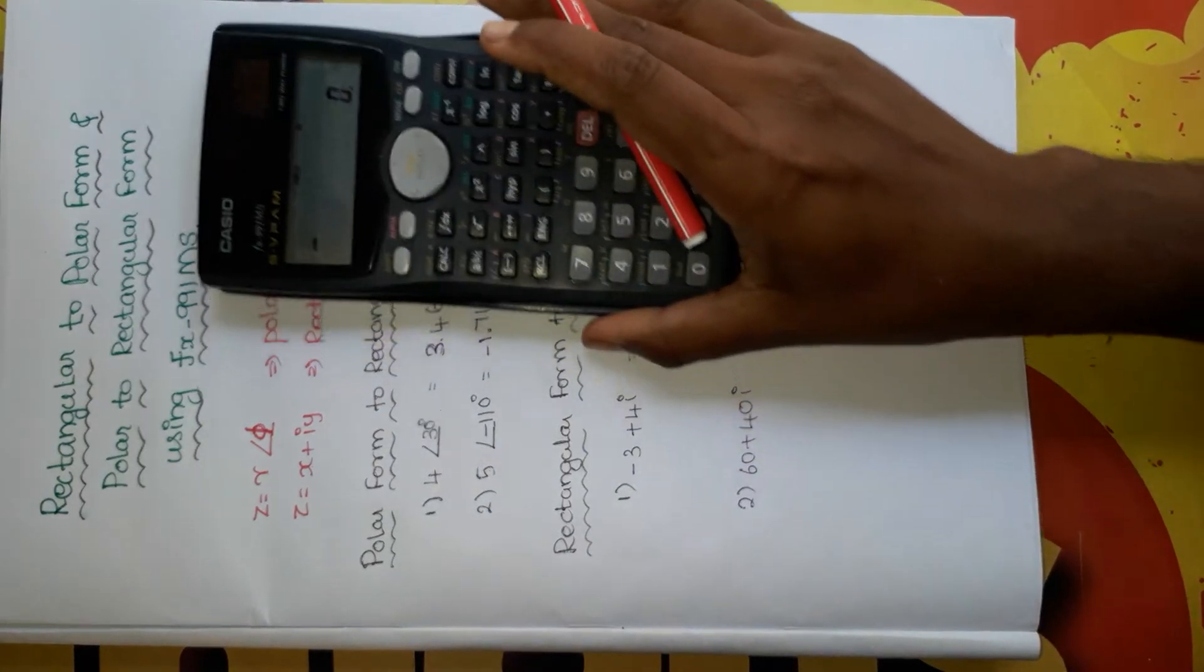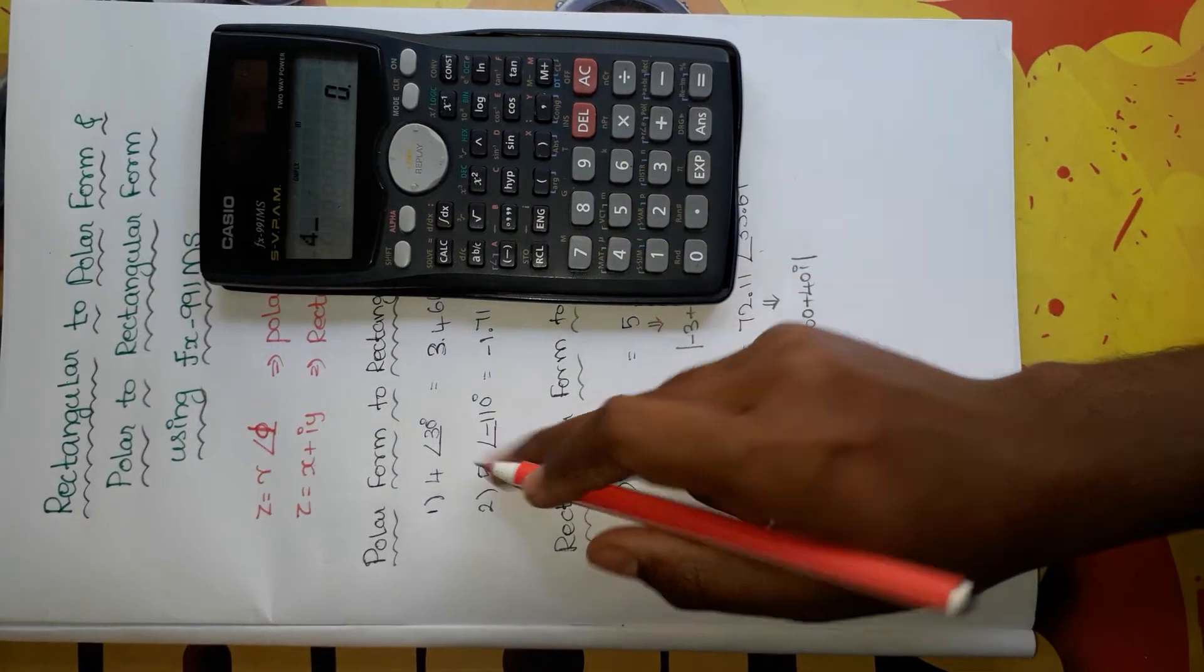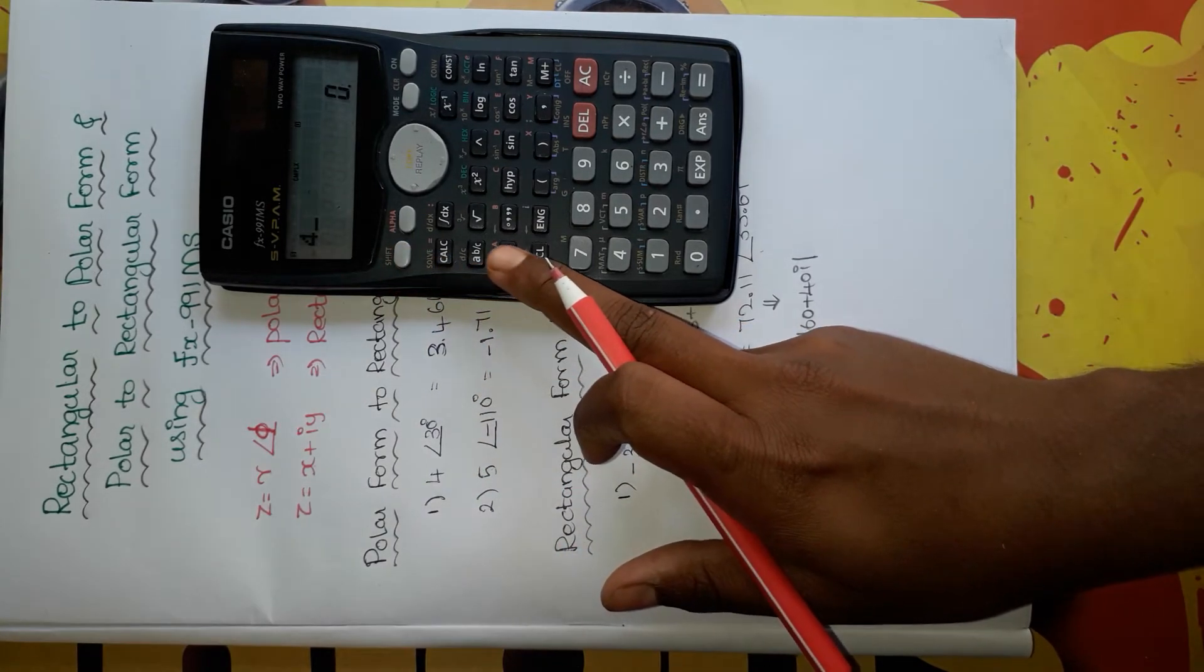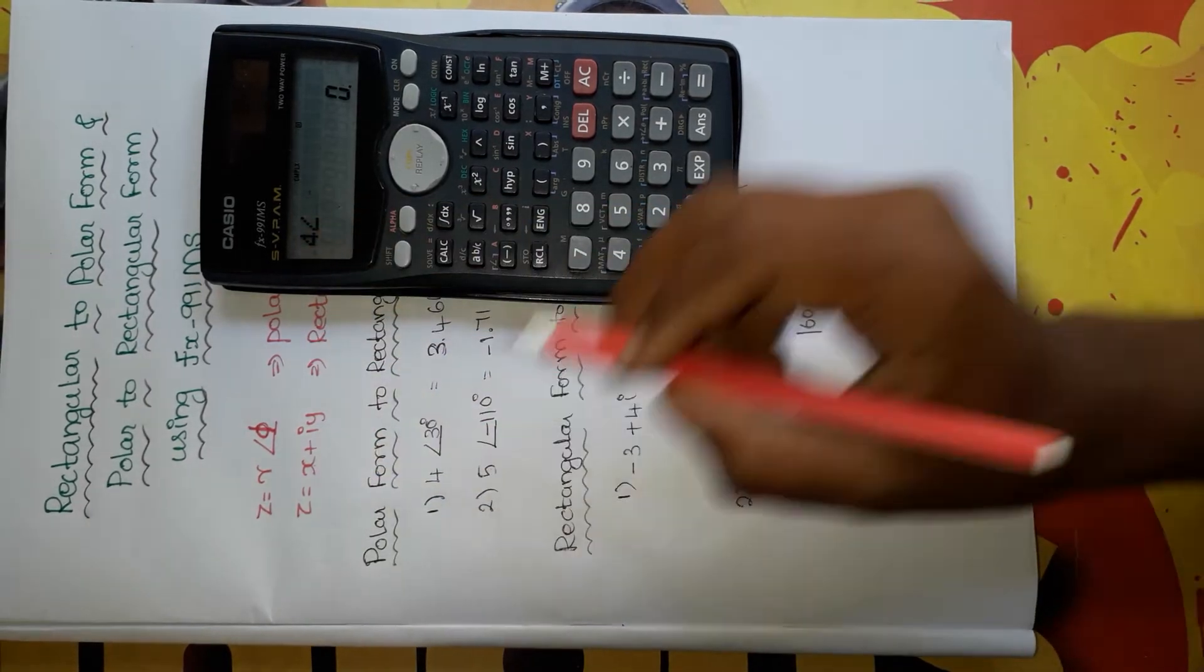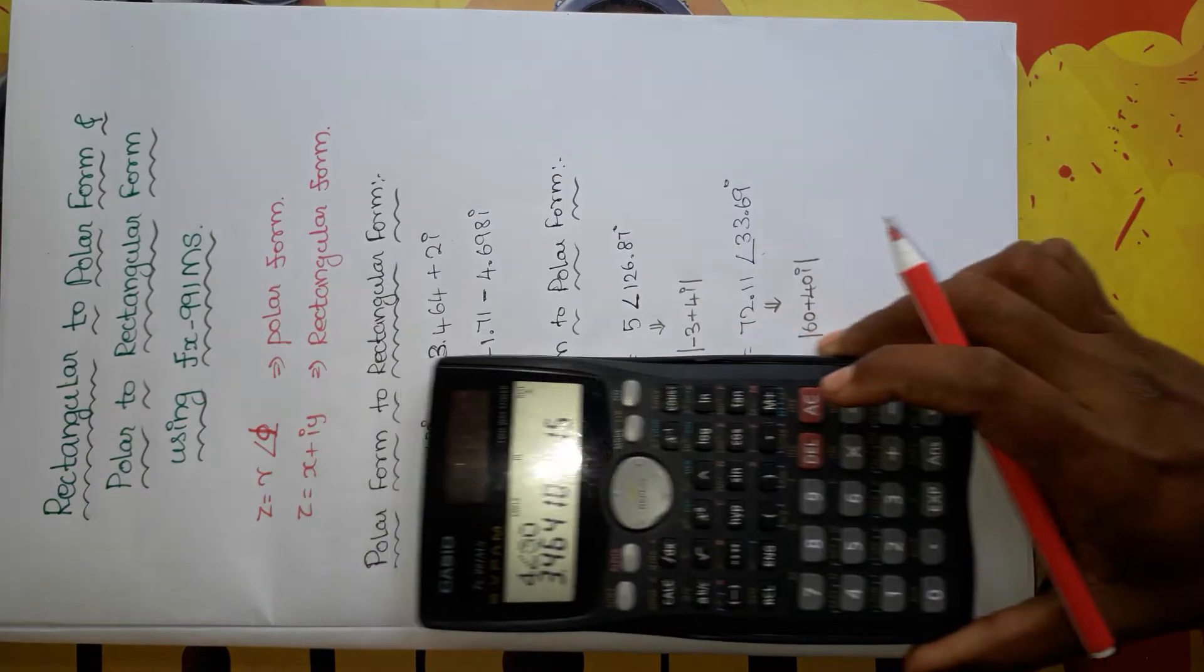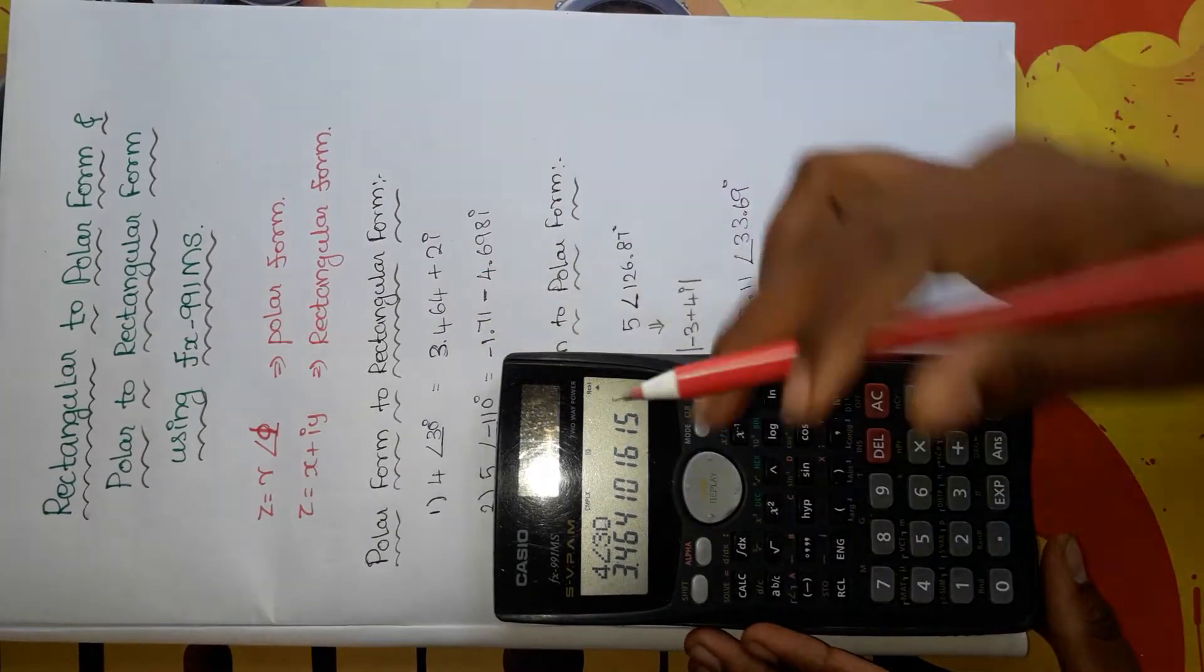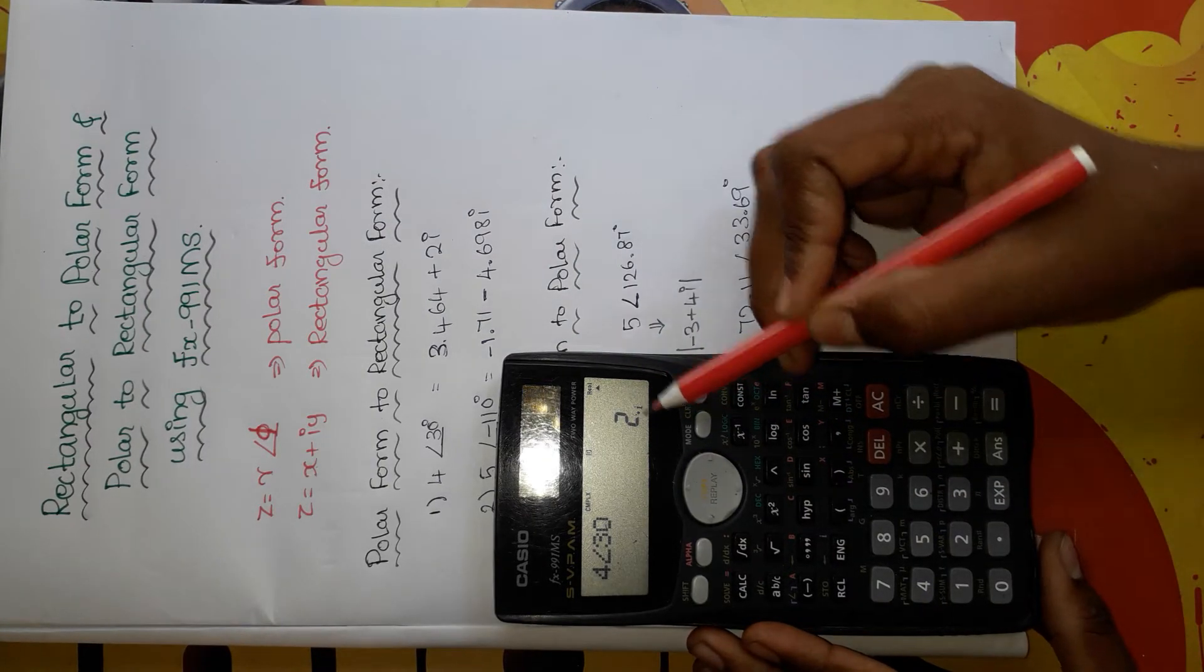It is 4 angle 30, right? So press 4. For the angle symbol, you have to press shift and then the minus symbol under the ab/c button, so you will get the angle symbol. Then press 30. Now press equal to, so you will get 3.464, the real part of this number. Then press shift and then equal to, you will get the imaginary part, 2i.